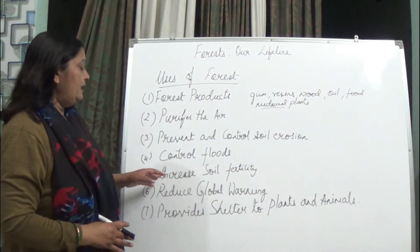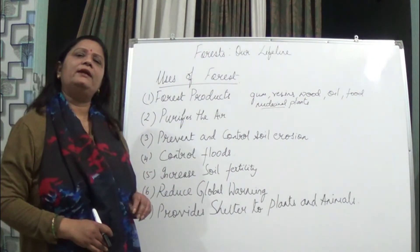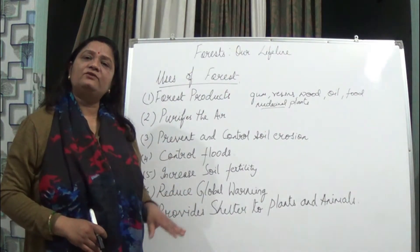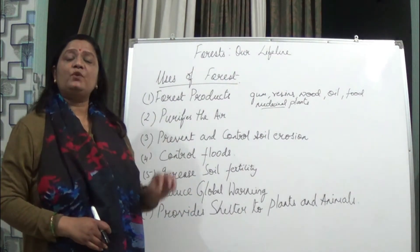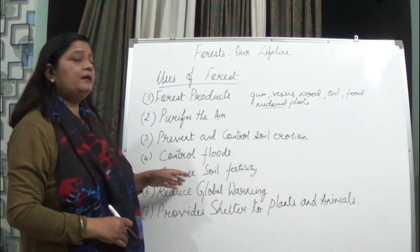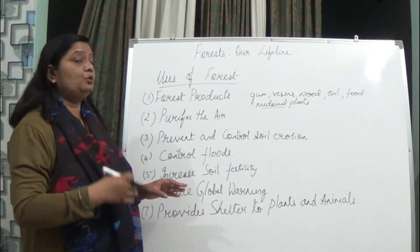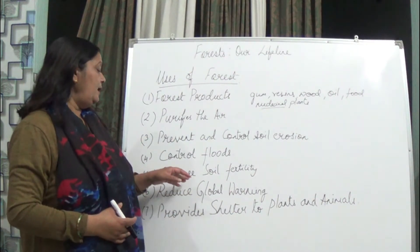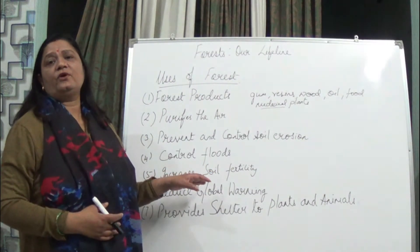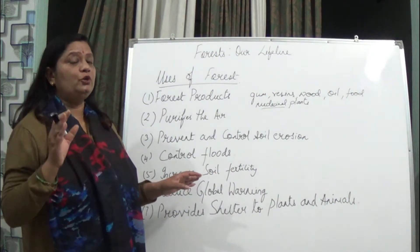Forests also increase soil fertility. Dead and decaying leaves on the forest floor, as well as dead animals, are acted upon by microorganisms, which convert them into humus, thereby adding fertility to the soil. The top layer of the forest is very fertile because it consists of humus.